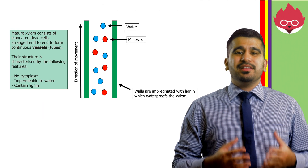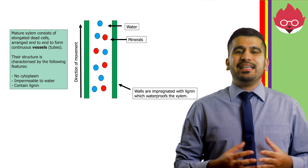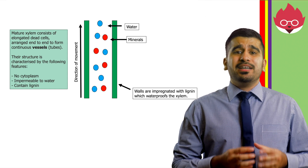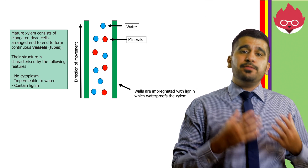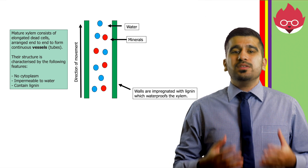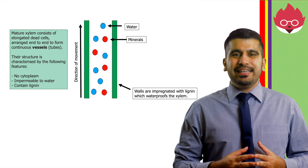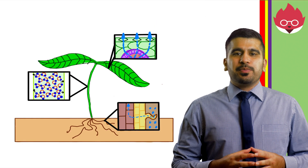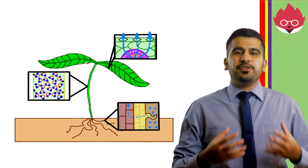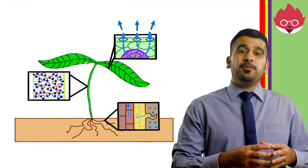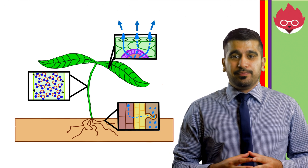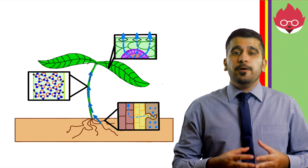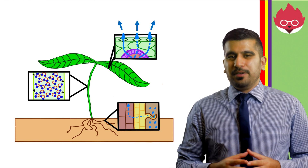For question 2, the xylem consists of elongated cells arranged end-to-end to form a continuous vessel. They have no cytoplasm and their walls are coated with a chemical called lignin, which waterproofs them. For question 3, transpiration is the evaporation of water from the aerial parts of the plant. It provides a suction effect which pulls water from the roots to the top of the plant.